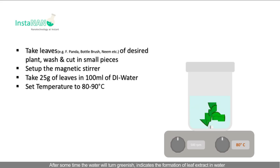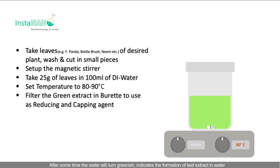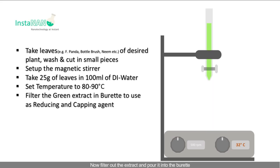After some time, the water will turn greenish, indicating the formation of leaf extract. Now filter out the extract and pour it in the burette. This extract will be used as reducing and capping agent.